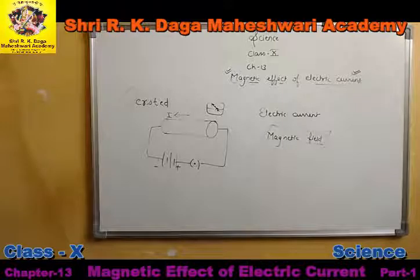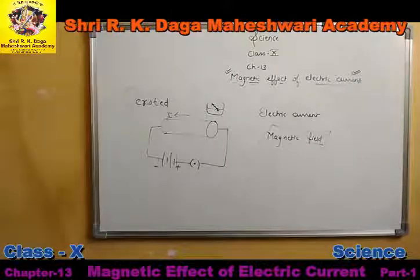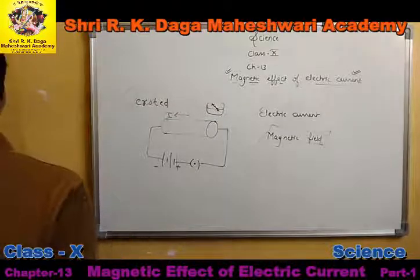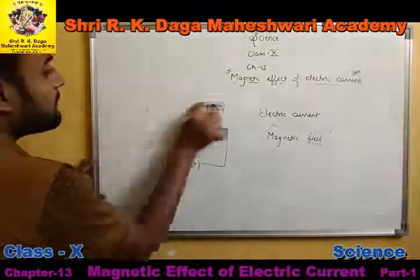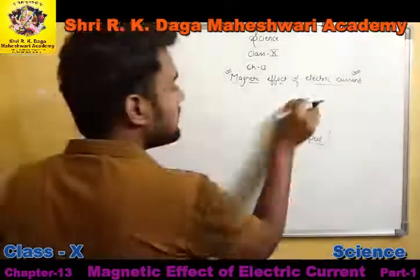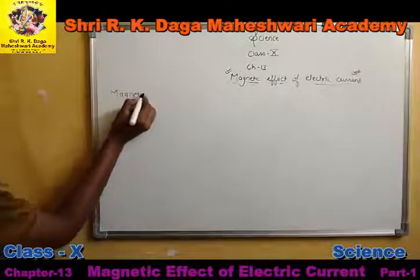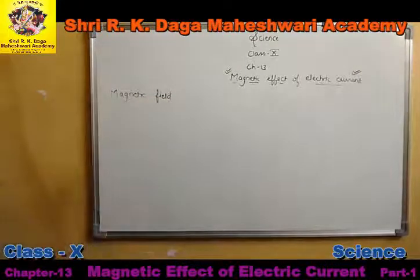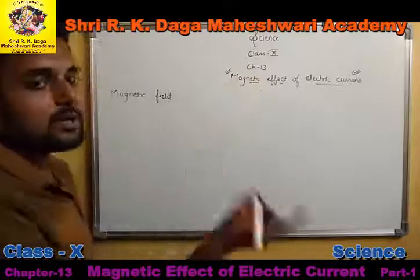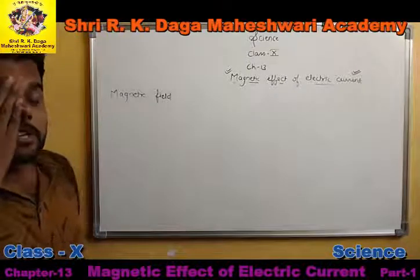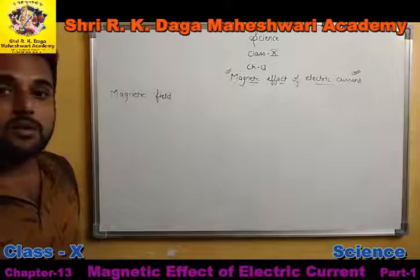The direction of the current and its effect on the magnetic field — we are going to discuss these things in this chapter. Before that, our next topic is that we have to understand two terms: magnetic field and magnetic field lines. We have already discussed the magnetic field — the particular area up to which a magnet can attract or repel another magnet is called the magnetic field, and outside that area there is no impact.